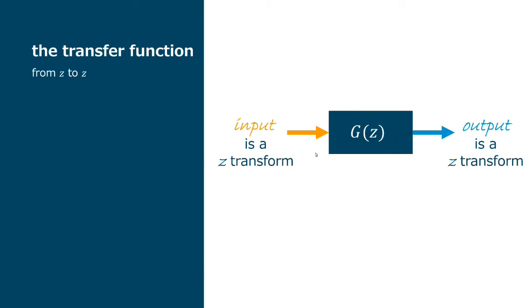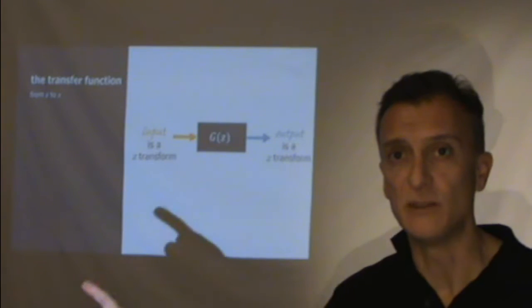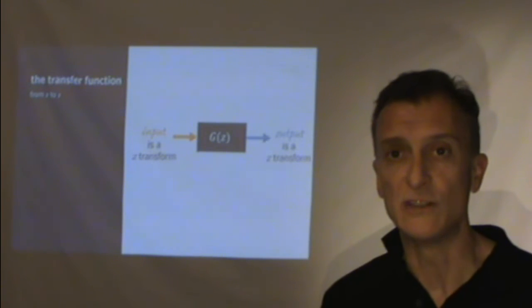So, when we are talking about the transfer function, we are talking about the relationship between the input and the output of the system. So, the Z transforms, of course, because we are on the Z domain.